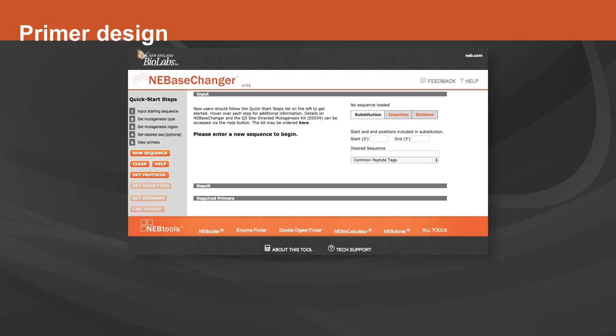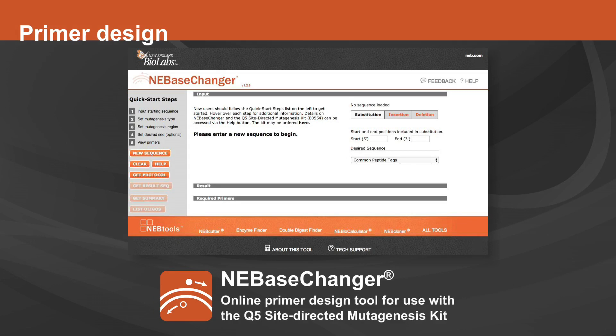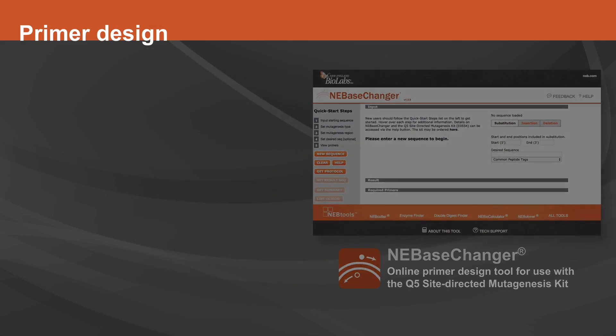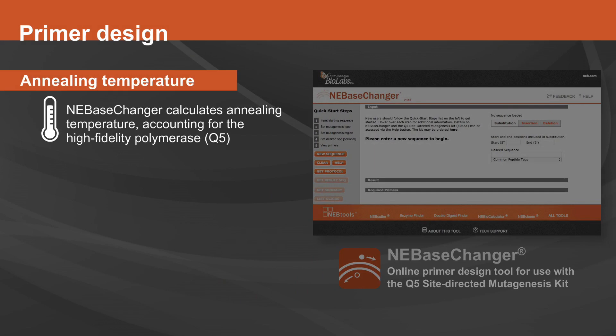For best results, back-to-back primers should be designed using NE Base Changer, our online primer design tool. Standard, non-phosphorylated primers can be used. NE Base Changer also calculates the annealing temperature for the specific mutagenic primers while accounting for the high-fidelity polymerase Q5. If NE Base Changer is not used to design primers, we recommend using a TM plus 3 rule to calculate the annealing temperature.